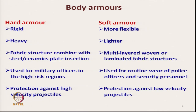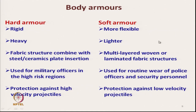Comparing hard and soft body armours: hard body armours are rigid whereas soft body armours are relatively flexible; hard body armours are heavy while soft body armours are lighter. Hard body armours use fabric combined with steel or ceramic plate insertion, whereas soft body armours use multilayered woven or laminated fabric structures without insertion. Hard body armours are used by military officers in high-threat regions; soft body armours are used by police officers and security personnel — hard for high velocity projectiles, soft for low velocity projectiles.